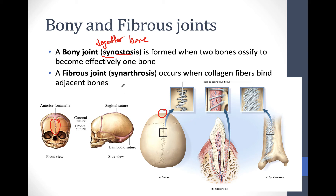A fibrous joint is called a synarthrosis. This occurs when collagen fibers bind adjacent bones together. There are three main examples in the body. The first is the sutures — here is a close-up of the sutures between the two parietal bones of the skull. You can see small fibers connecting them. These are pretty much immobile and are found only in the human skull.